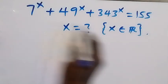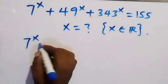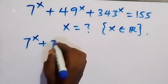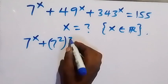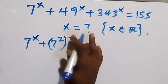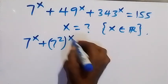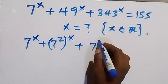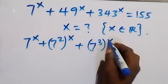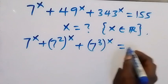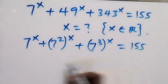Let's write this equation as 7 raised to the power x, plus 7 squared then raised to the power x, plus raised to the power x, then plus 7 cubed raised to the power x, then equals to 155.